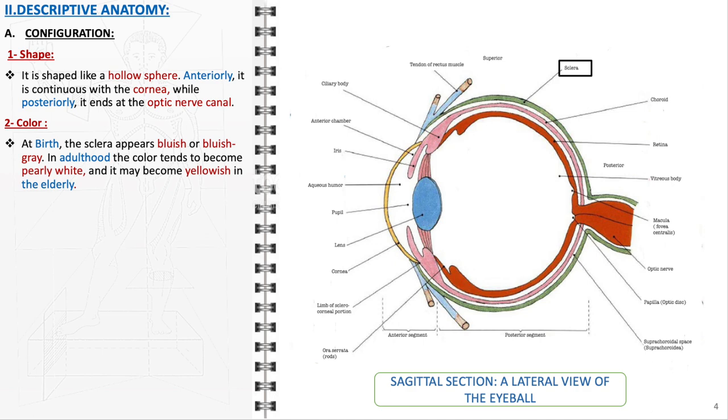Its coloration varies significantly throughout a person's life, typically bluish or bluish-gray in infants, it transforms into a pearly white in adults and often acquires a yellowish tint in the elderly due to age-related changes.